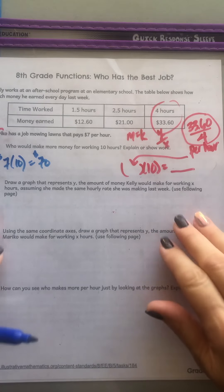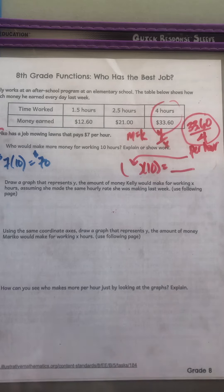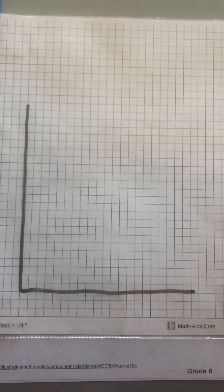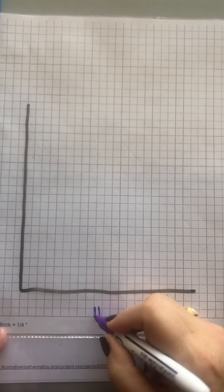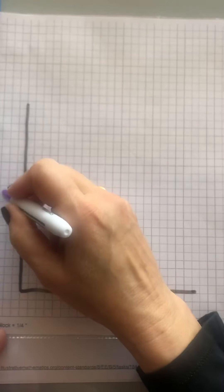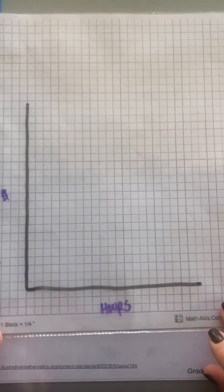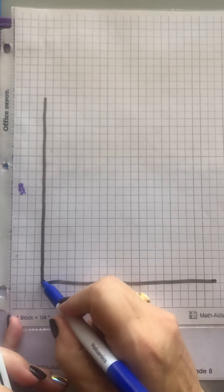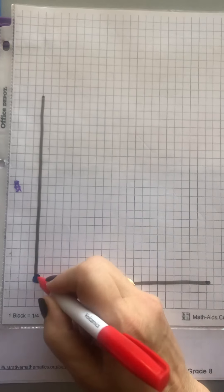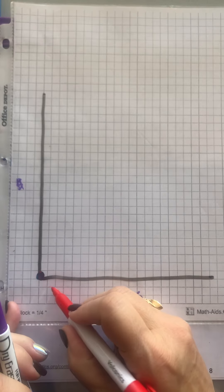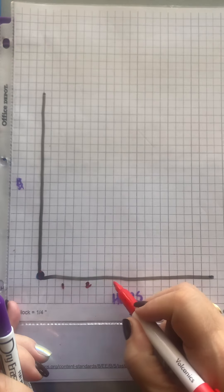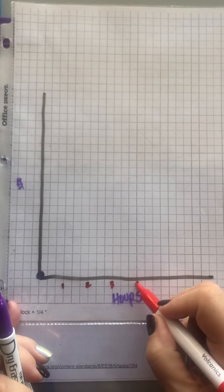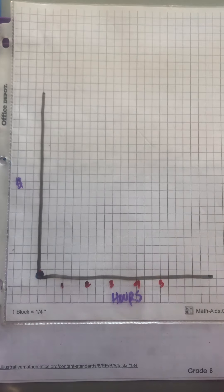On parts B and C, you're going to be drawing the graph. On part B, you're going to draw how much Kelly would make. So you go to your graph paper on the next page — I already drew my axes. Down here we're going to have hours, and over here we're going to have money that's made. You're going to graph what's happening with these two people. Both of them are going to start at zero, zero, because if they're not working, they're not making any money. Then you decide how to scale your axes — every four, or every three, however you want to do it.